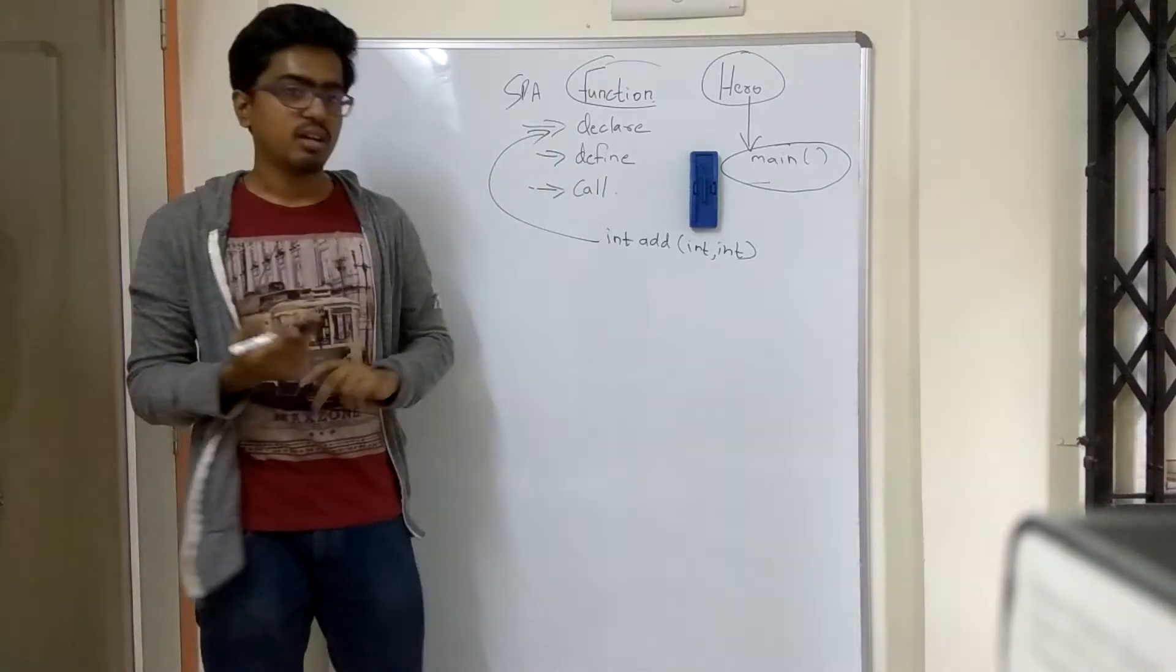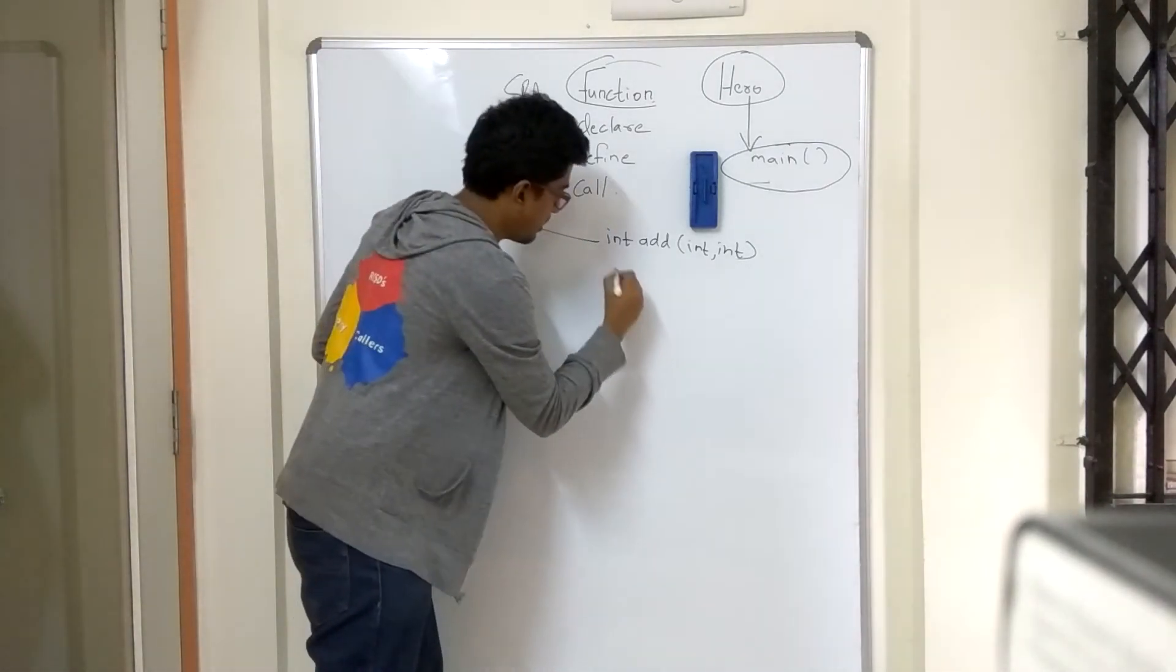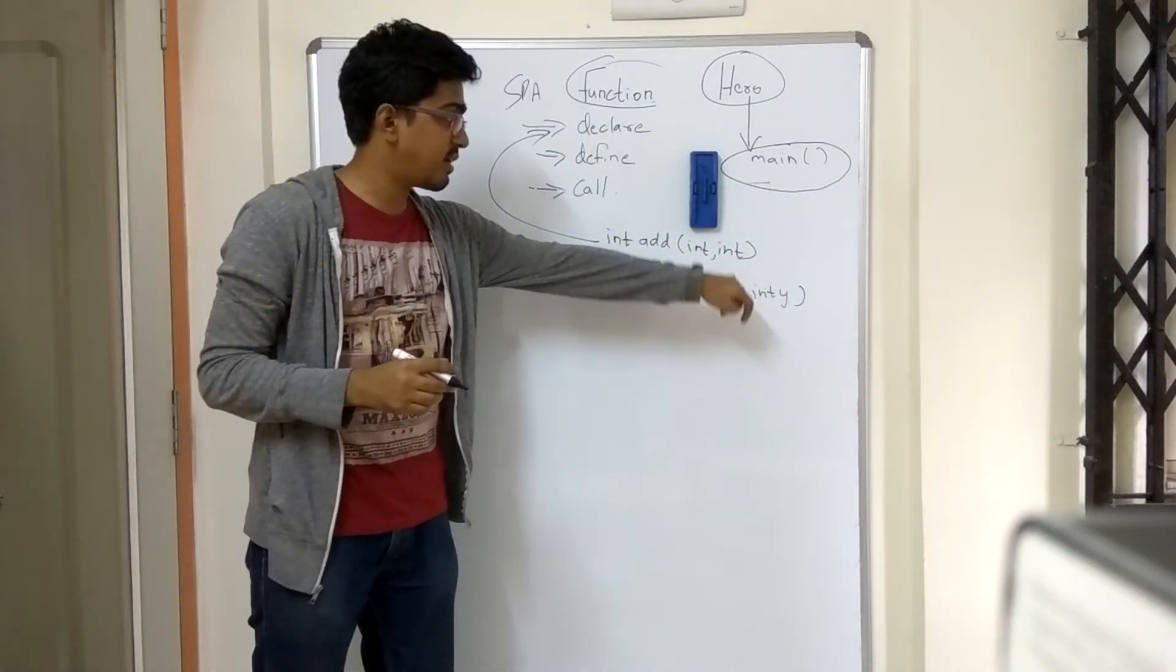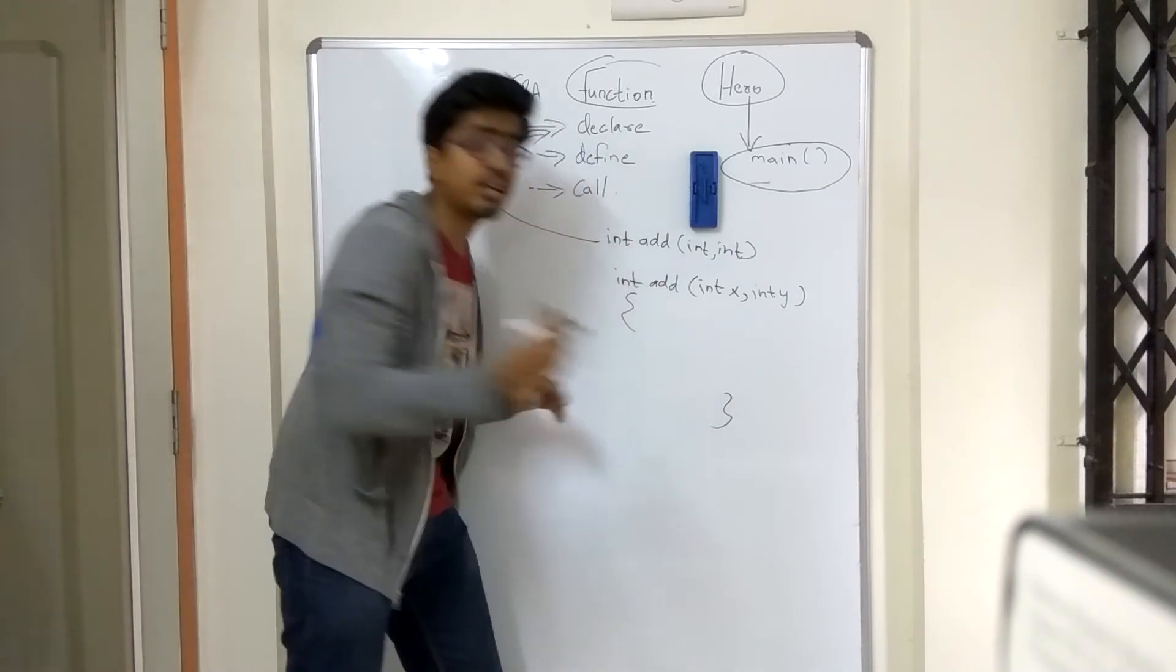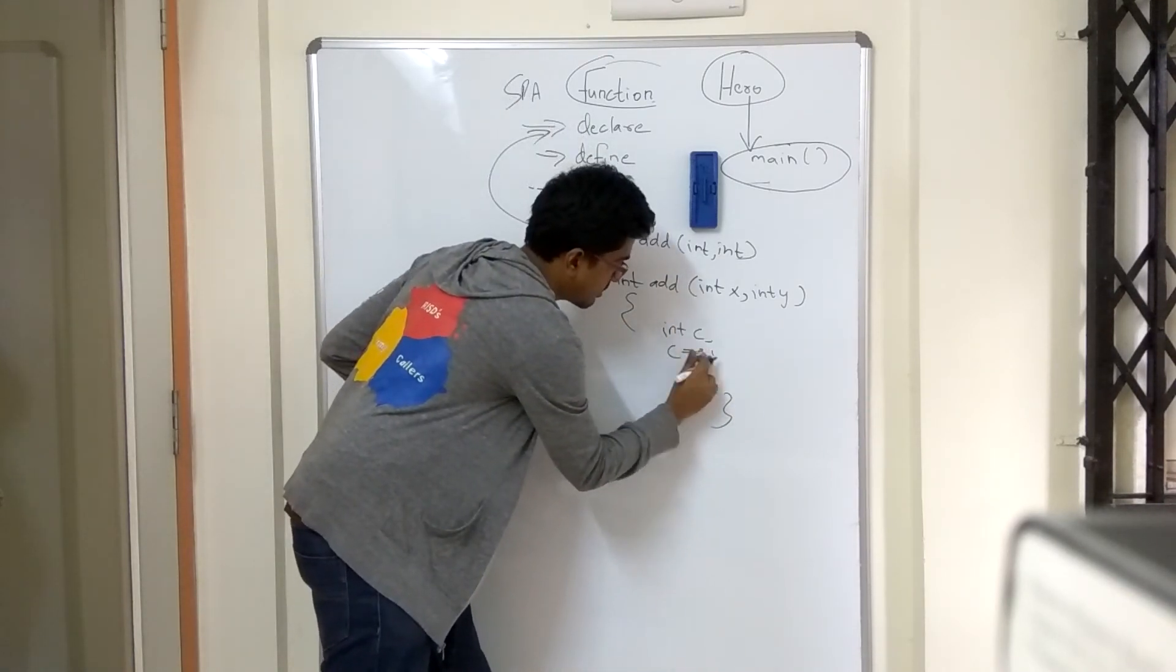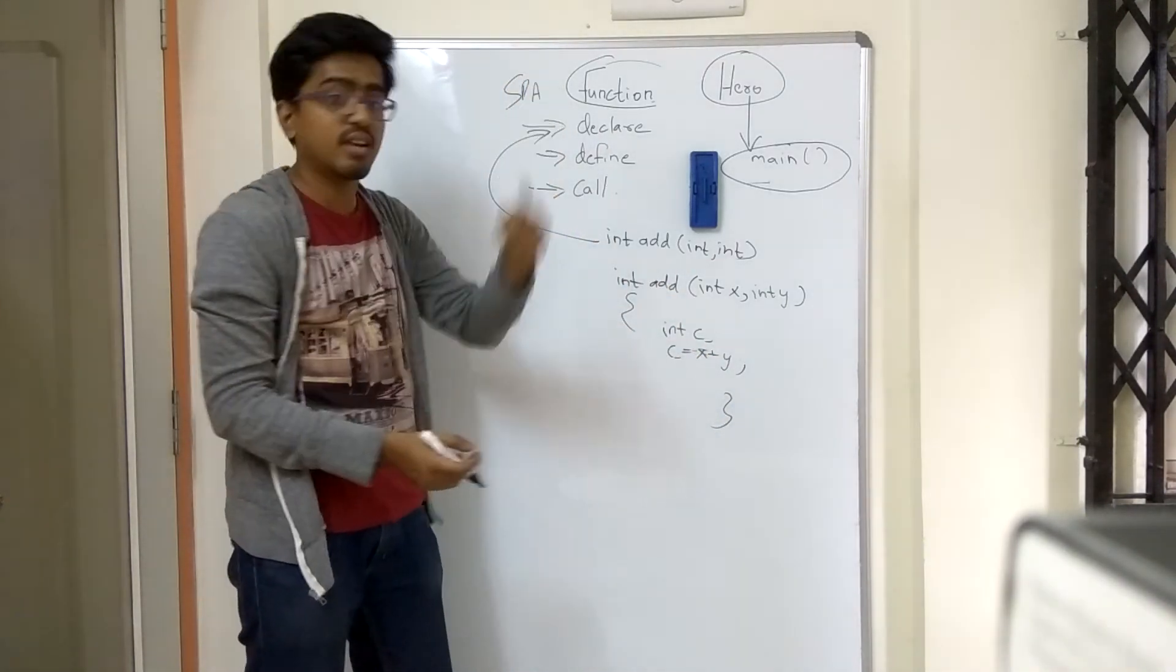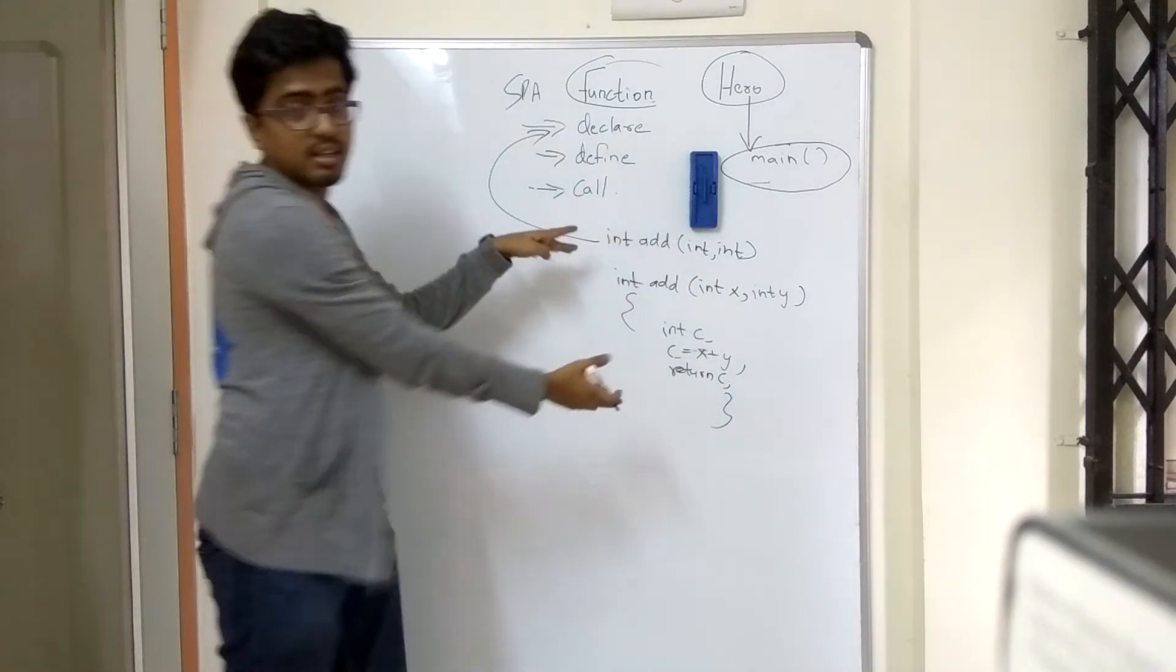Now what, my definition is going to be. Definition mein bhi aur specific hona padega. So definition will be like: int add(int x, int y). So matlab usme specify kiya woh input le kya raha hai. Woh x aur y le raha hai. Abhi main usko operate karunga. I will define a new variable c. Int c. Phir main bolunga c equals x plus y. Jo x plus y maine andar liya, usko main use kar raha hun. Usko add karke, maine c mein store hai. And because this function has to return something, kya wapas kuch dega. Woh return karega c. So I will write: return c. So this becomes my definition.